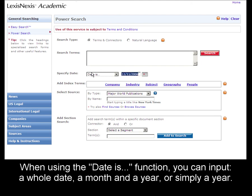You can also use the Date Is box to bring back all articles in a particular month, or even all articles in a particular year.